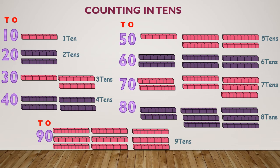Let's look at 90. How many groups of 10 blocks do we have? 1, 2, 3, 4, 5, 6, 7, 8, 9.